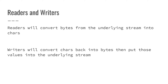Now we have readers and writers. Readers will convert bytes from the underlying stream into characters. Writers will convert characters back into bytes and then put those values into the underlying stream. As I said, streams communicate with bytes — that's the unit of data for streams. We humans are not good at reading bytes. So we have these special classes called readers and writers, which automatically convert bytes to characters for us so we can read them. Readers read data from the stream and show you the characters. Writers take the characters you give them, convert to bytes, and put those bytes into the stream.